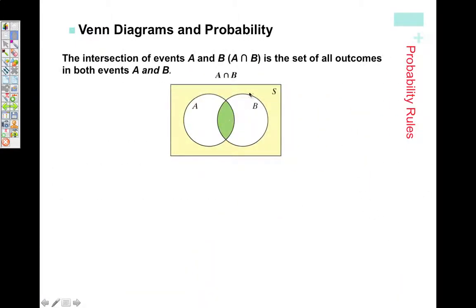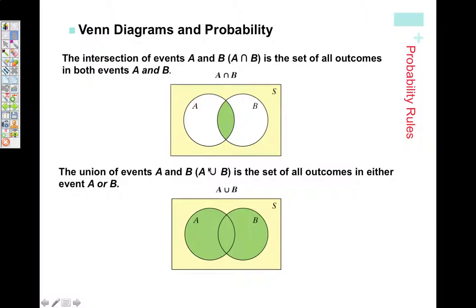The intersection looks as such, and we use the word AND to go with intersection. A and B, we're looking for the intersection of A and B. The union of A and B, A∪B, is A or B. Union goes with the word OR, and that would be everything in A and everything in B.